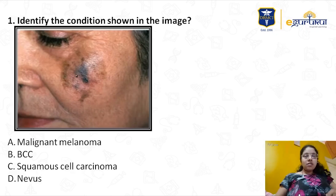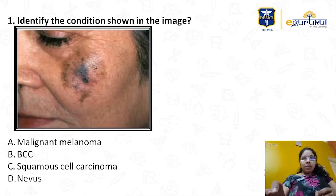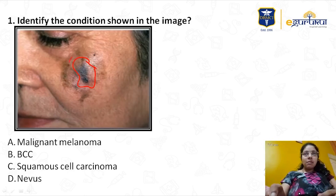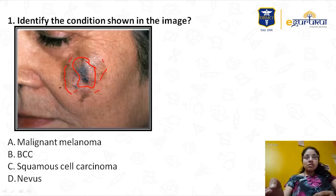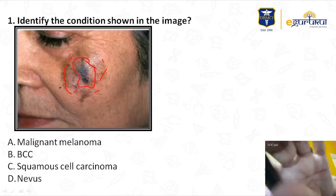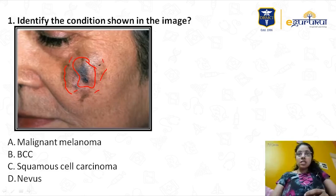Here you can see a hyperpigmented plaque over the face with surrounding hyperpigmentation also. Based on this you can come to a conclusion. The options are: malignant melanoma, basal cell carcinoma, squamous cell carcinoma, and nevus.